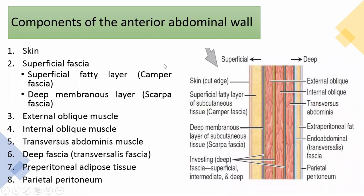The components of the anterior abdominal wall from superficial to deep are: skin, the superficial fatty layer of subcutaneous tissue, and the deep membranous layer called Scarpa's fascia. Then the external oblique muscle, internal oblique muscle, transversus abdominis muscle, the deep fascia, preperitoneal adipose tissue, and the parietal peritoneum.